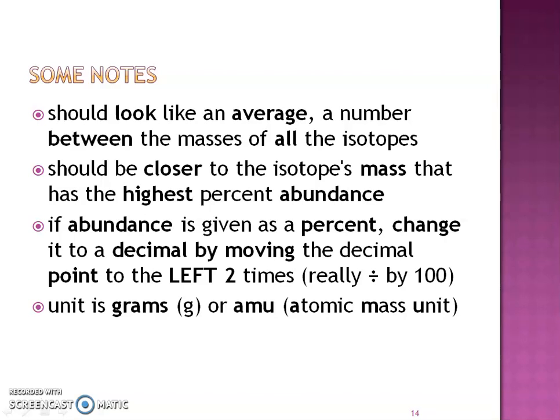So some notes. We're going to do some checkpoints. When you get your answer, the average, the value that you get should look like an average. So it should be between the masses of all the isotopes. However, the second checkpoint is that average, that number, that value should be closer to the isotope that has the highest percentage. So again, I want to remind you that if the abundance is given to us as a percent, we got to change it to a decimal. You know how to do that now - move the decimal place two times to the left because you're really dividing by 100. And our units for average atomic mass is either going to be in grams or AMU, atomic mass unit, either one. So you'll see them both and recognize them both.